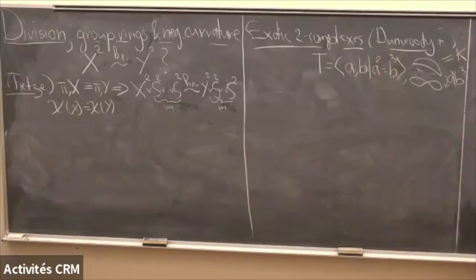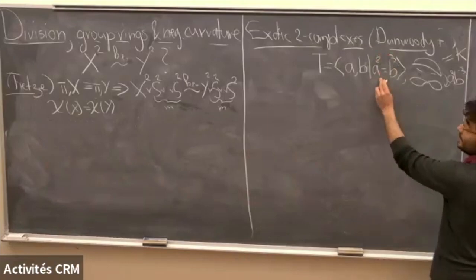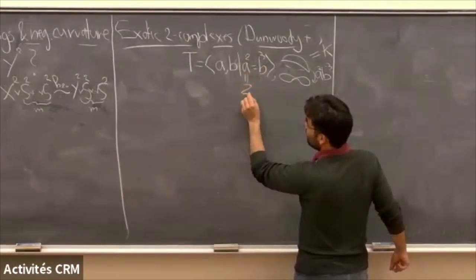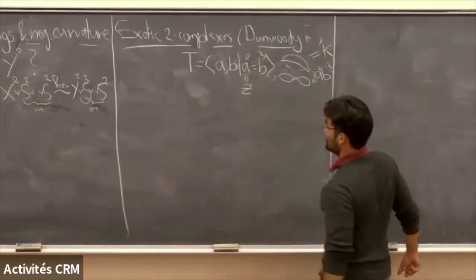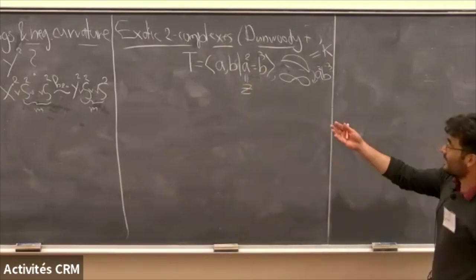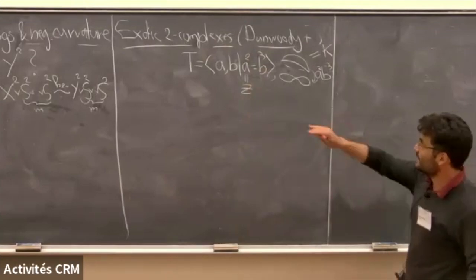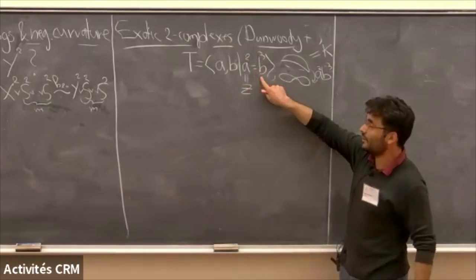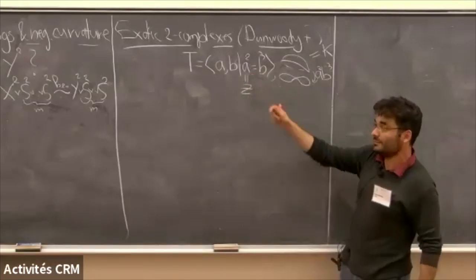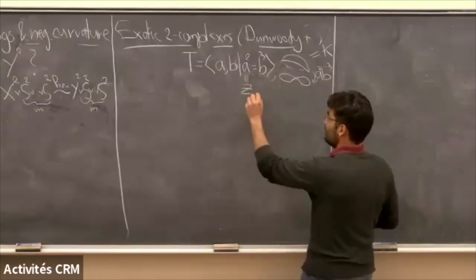The basic thing behind these exotic complexes is that the trefoil group, even though it's a very simple group, does have a center. The element a² — we've heard a lot about what centers can do. Since a² = b³, it commutes with a and it commutes with b, so it commutes with everything.